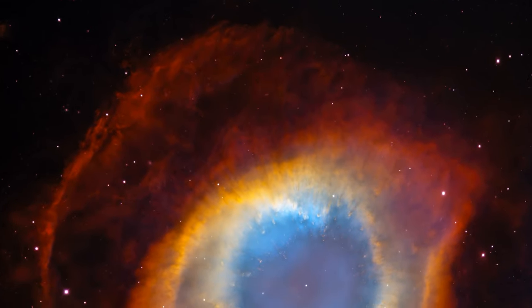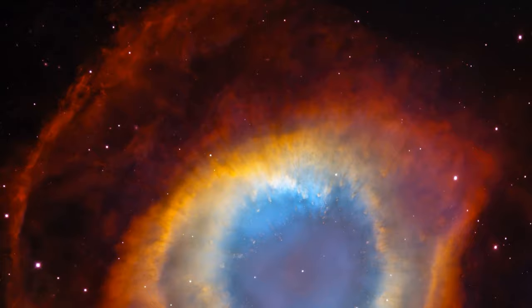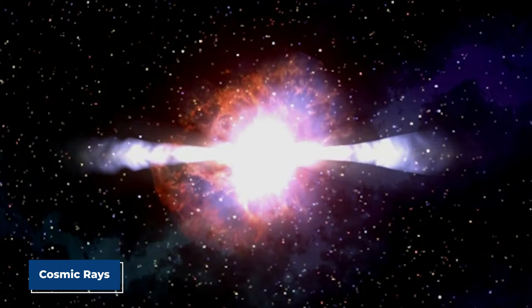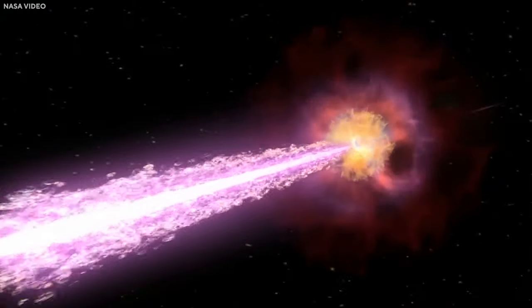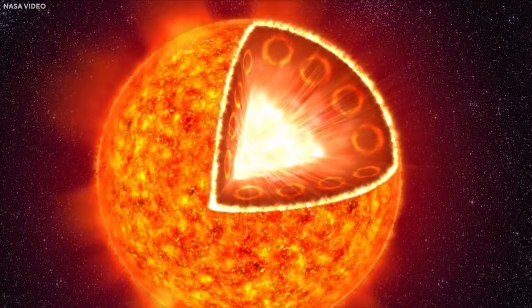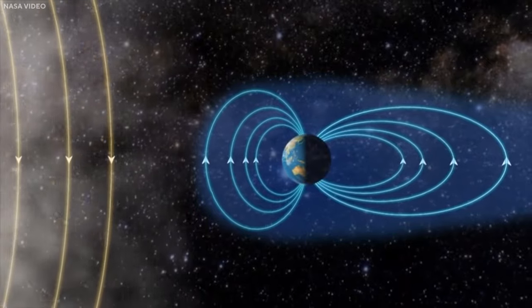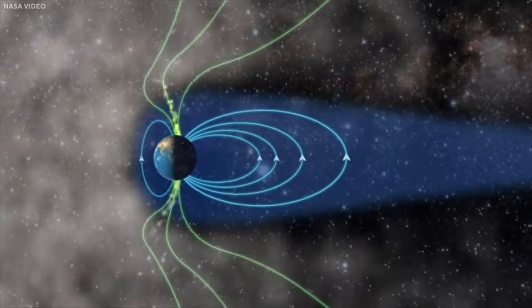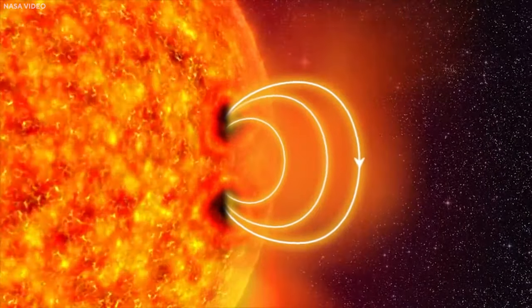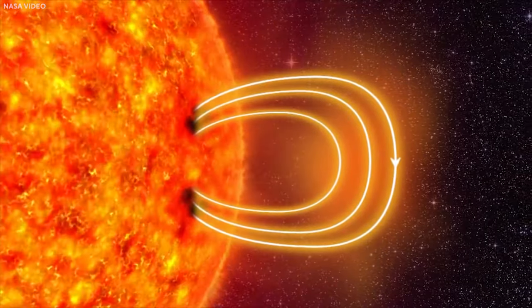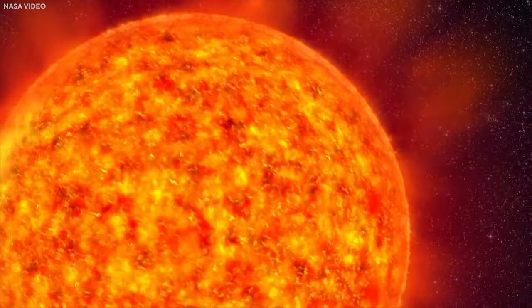Scientists are currently studying the potential effects of this explosion on Earth. There is speculation that the explosion could release cosmic rays, high-energy particles traveling through space. These rays might interact with interstellar material, producing charged particles that could lead to beautiful auroras when they reach Earth. However, due to the distance of Betelgeuse, these rays would likely be diluted and absorbed by our atmosphere, causing minimal impact.